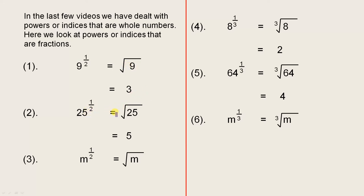25 to the power of a half means the square root of 25, which is 5. If we have any number, that's why I've written m, doesn't matter what the number is. If it's to the power of a half, that's the square root of the base. So that's our first example, when the fraction is 1 half.